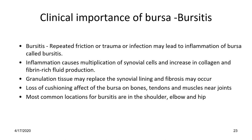We have now covered the general features of synovial joints, including the various components: articulating surfaces, articular cartilage, articular capsule, articular disc, joint cavity, synovial membrane, accessory ligaments, and bursae. These are important both from the examination point of view and in clinical practice.